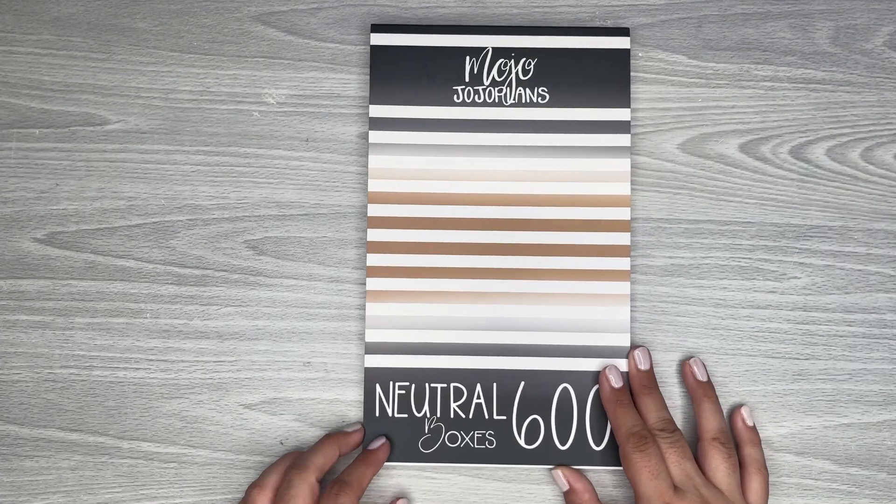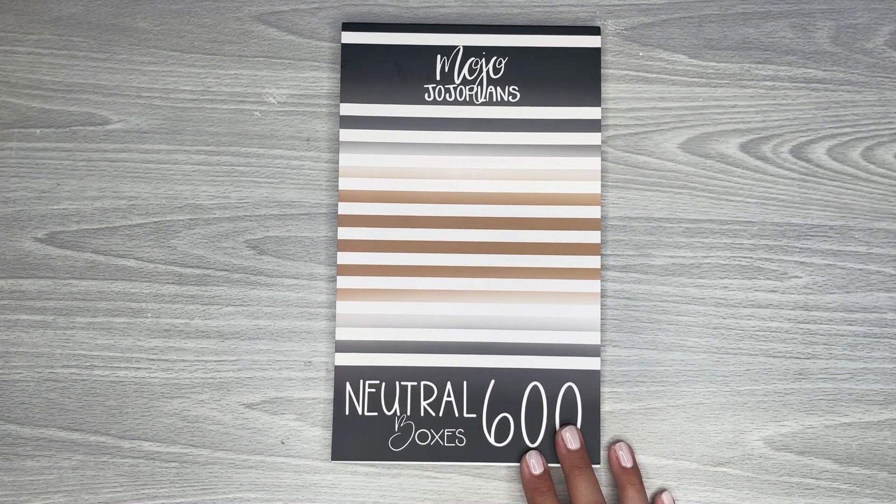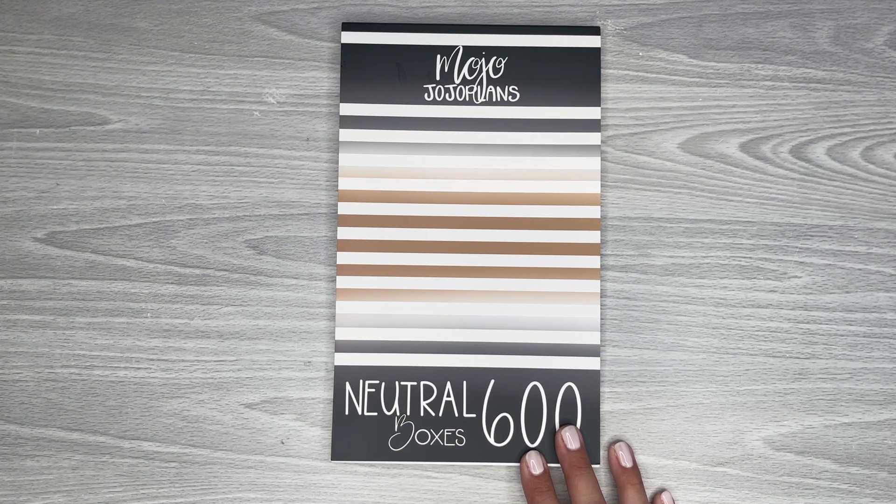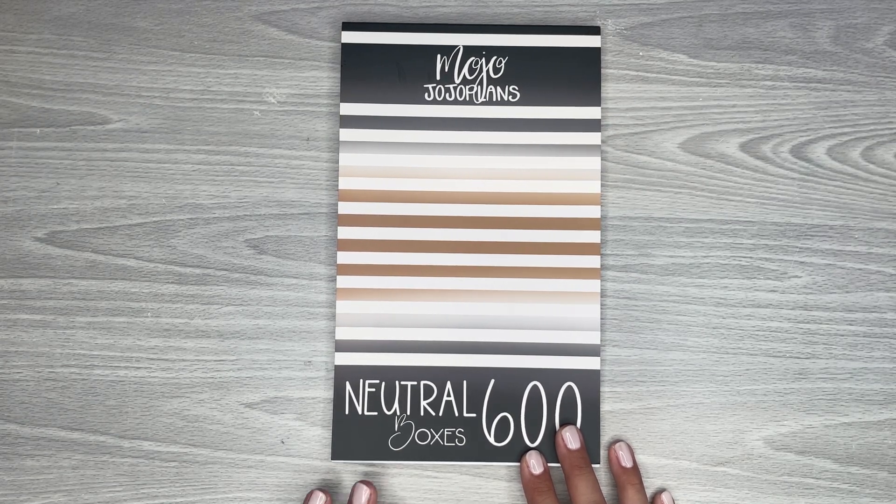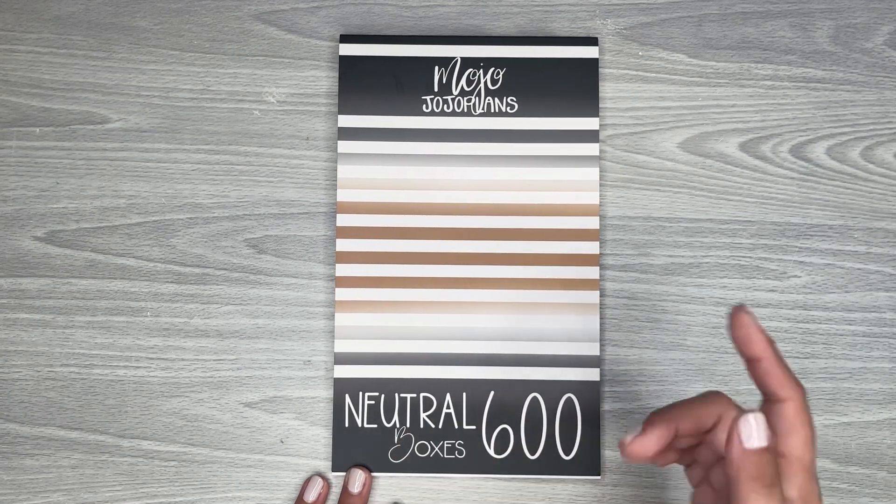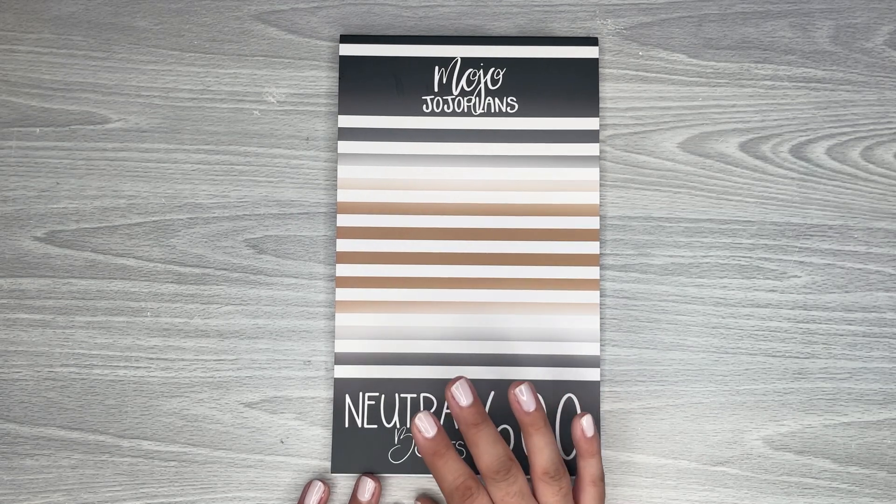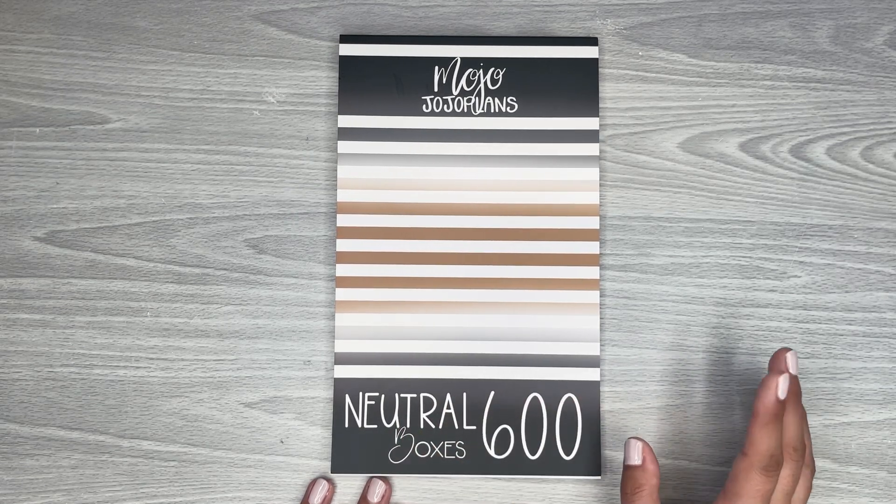All right. So that is the last page for the neutral sticker book. Again, this is going to be available to purchase on Friday, July 30th at 2 p.m. Mountain Standard Time on JoJo's website. So I'll make sure to link that down in the description, the website that you purchase it at. Make sure to mark your planners.